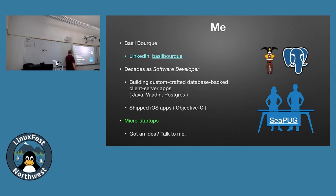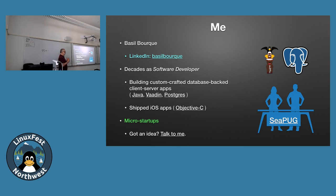I am a developer. I've been doing custom database-backed apps for years for businesses. Nowadays I work using Java with Vaadin, which is a web app development tool. You do everything in Java on the back end — you say you want a field, a label, a button, and it automatically generates all the HTML, CSS, and JavaScript. When I'm doing database work, I use Postgres almost always.